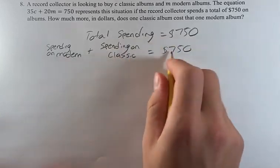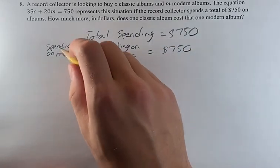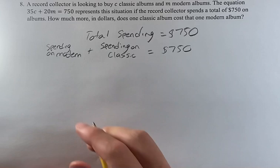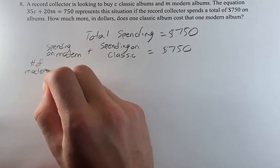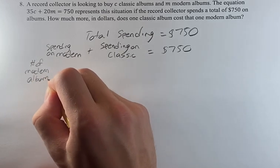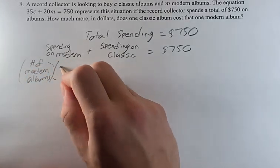Now how are each of these broken up? Because this is starting to look like these terms. So spending on modern, that's going to be the number of modern albums times the price of one.